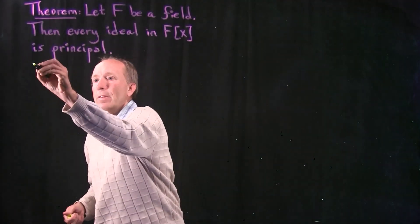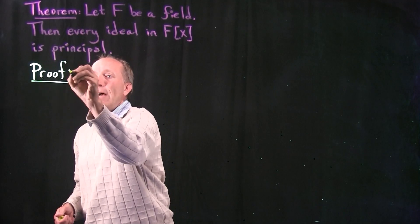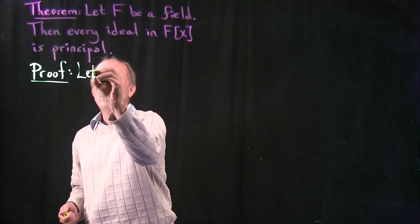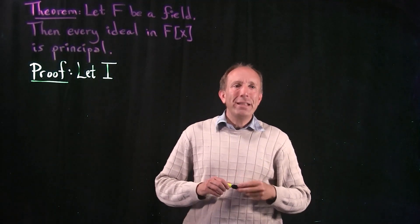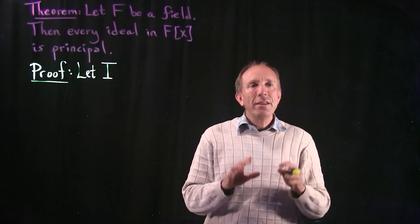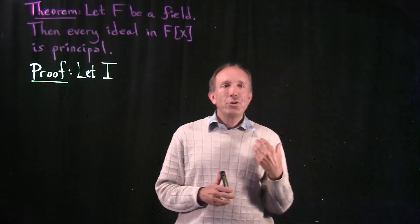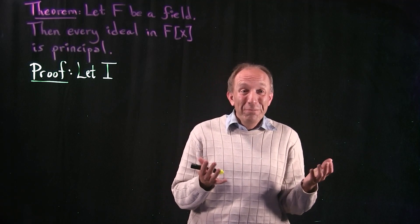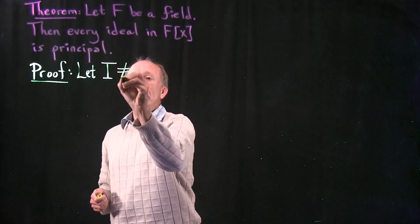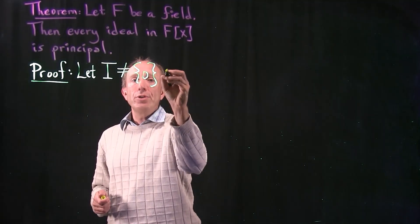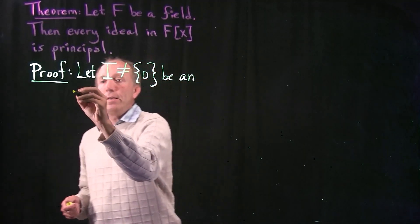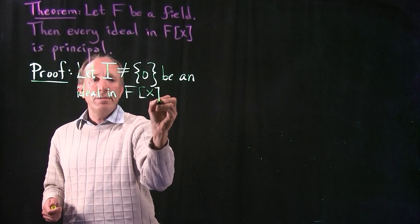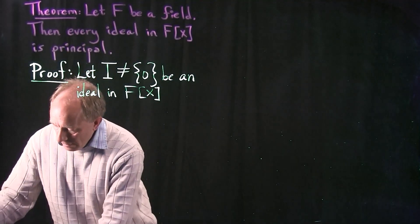Let's write down the proof. What I'm going to have to do is start with an arbitrary ideal, let me call it capital I. However, I may as well make the assumption from the beginning that I is not the zero ideal, because the zero ideal is already principal, consisting of all multiples of zero. So we may as well start off with the assumption that I is not zero. But I am going to take this as an ideal in capital F[x].